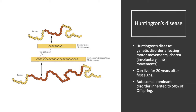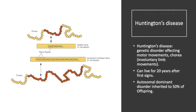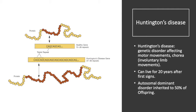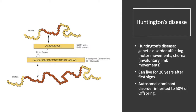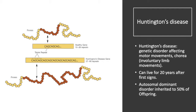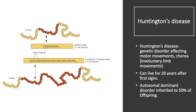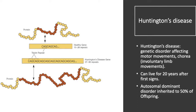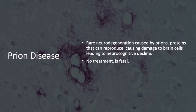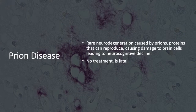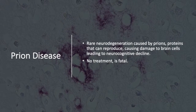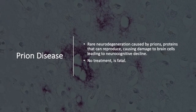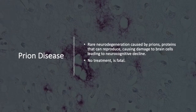Huntington's disease is a genetic disorder that affects motor movements, including chorea, which is involuntary limb movements. The individual can live for 20 years after the first sign of Huntington's. It is an autosomal dominant disorder inherited by 50% of offspring. Prion disease is a rare neurodegeneration caused by prions, which are proteins that can reproduce and cause damage to brain cells, leading to neurocognitive decline.